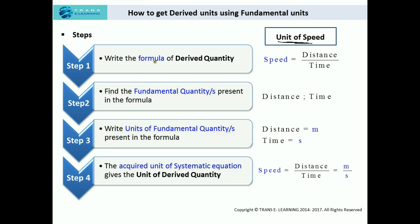The first step: write the formula of the derived quantity. So if we need to find the unit of speed, the derived quantity is speed. Speed is equal to distance upon time. So the first step is done.